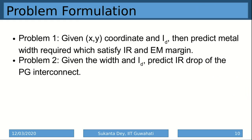We designed two problems. The first problem: given the XY coordinate and the switching activity current of the functional block, predict the metal width required to satisfy the IR drop margin for that particular location. The second problem: given the width obtained from problem one and the switching current, predict the IR drop of the power grid interconnect.